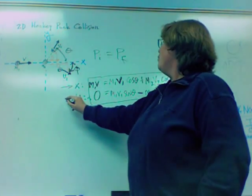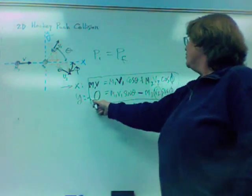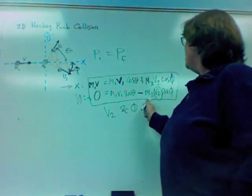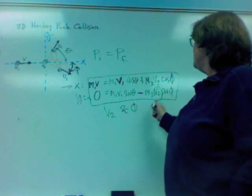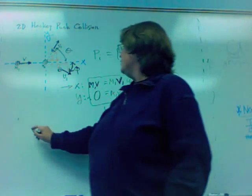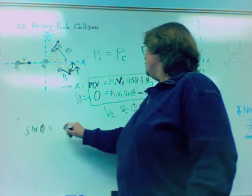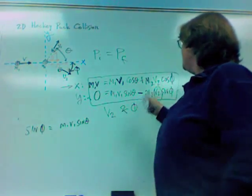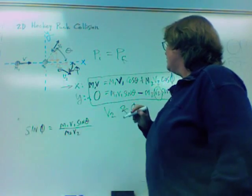Why don't we solve for sine of phi in the y direction? That looks pretty straightforward. We get the terms on opposite sides of the equation. We isolate sine of phi by dividing by M2 V2. Let's do that. Sine of phi is simply going to be M1 V1 sine of theta divided by M2 V2. Let's save that.